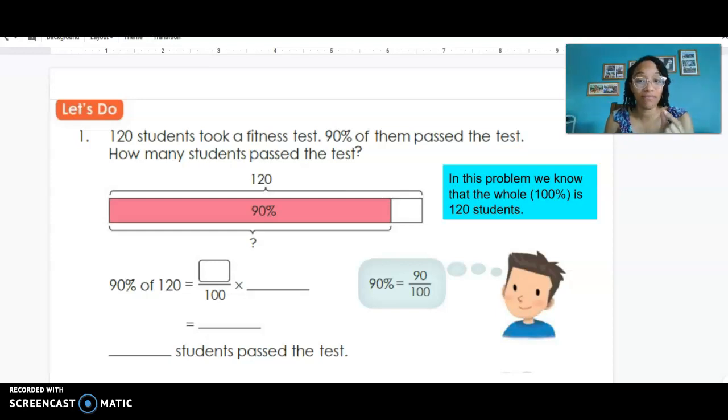So we're going to translate 90% of 120 - those words - into math terms. 90% is the same as 90 over 100 because we know percent means out of 100. Look at that thought bubble there if you were getting lost. Now when we look at what to multiply it by, we're changing the 'of' to a multiplication sign and then we just rewrite that term of 120. We write 120 in that blank.